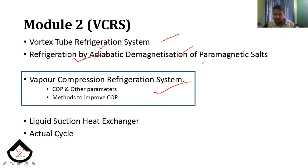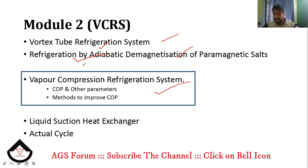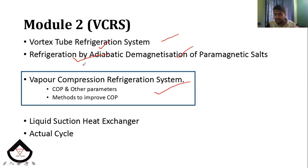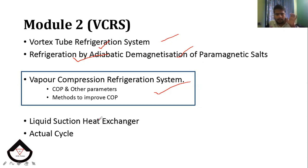What is paramagnetic salts? This is the demagnetization system. The Vortex Tube Refrigeration System is a theory topic. It involves the T-S diagram, H-S diagram, and P-H diagram. The Vortex Tube program is analyzed in the same way, including the P-H graph.